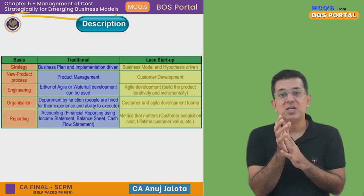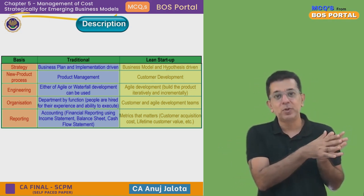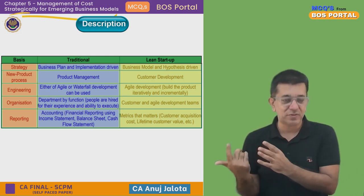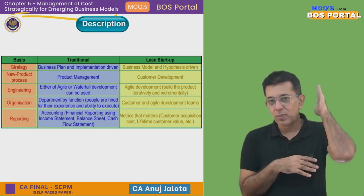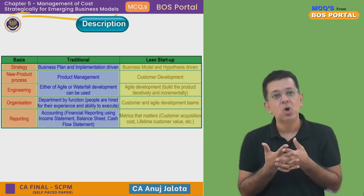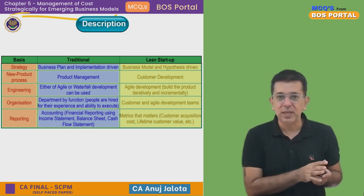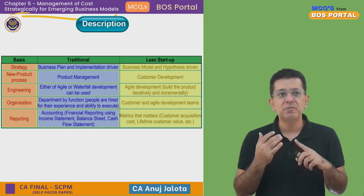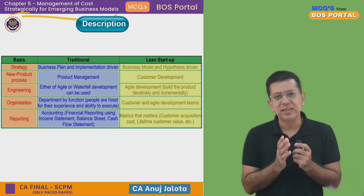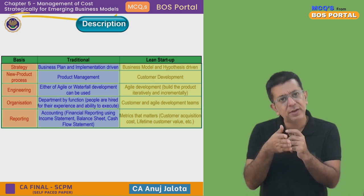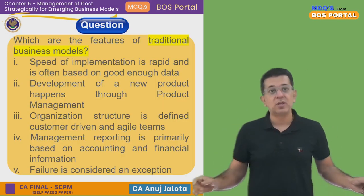These days even traditional companies are shifting to new methods of performance evaluation. Lifetime customer value is used not just by new companies but also by Apple — for example, calculating how much a customer who has used iPhones from iPhone 4 until now has given to Apple. Traditional companies like Reliance still rely on income statements and balance sheets for investor reporting, but are also using new metrics internally to evaluate performance.